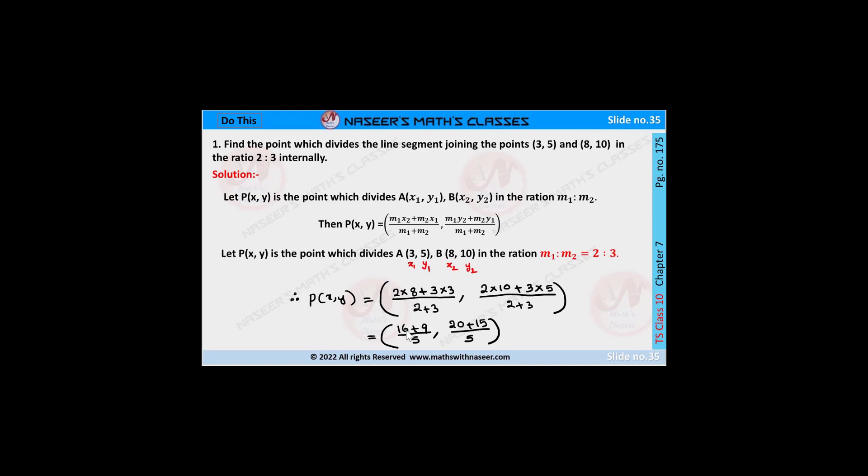2×8 is 16 and 3×3 is 9. In the y-coordinate, 2×10 is 20 and 3×5 is 15. By adding 16 + 9 we get 25, and by adding 20 + 15 we get 35.